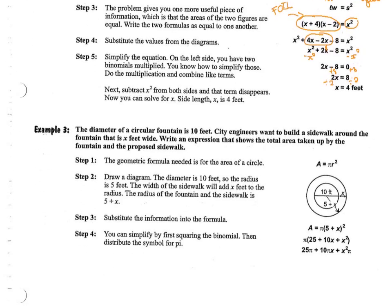And now let's talk about circles. We know that the area of a circle is pi r squared. There is no use for diameter in area of a circle - there is no use for diameter. We only care about the radius. The diameter of a circular fountain is 10 feet. City engineers want to build a sidewalk around the fountain that is x feet wide. Write an expression that shows the total area taken up by the fountain plus the sidewalk. So fountain and the sidewalk. Area of fountain and the sidewalk. Again, picture is drawn for you, and if it's not, you should be able to draw this.